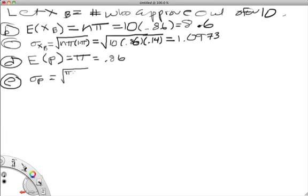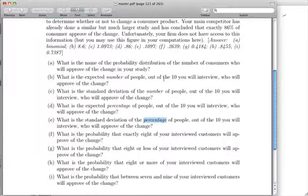This is equal to the square root of pi times 1 minus pi all over n. So we can go fill in our numbers at this point. Pi is 0.86, 1 minus pi is 0.14, and n again is 10. So if you do the math this works out to be 0.1097. So that's a decimal point right there. You can put a leading zero there if you like.